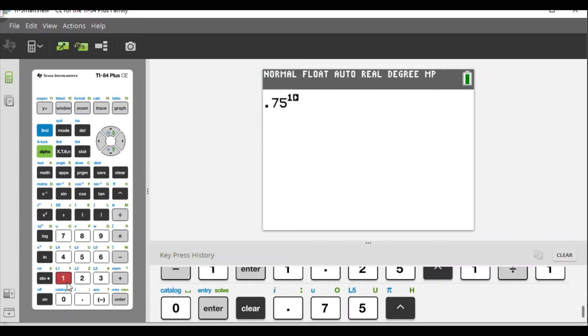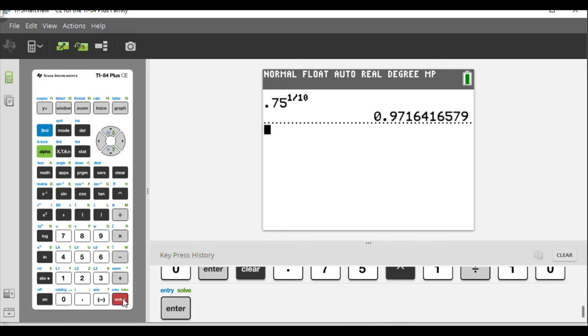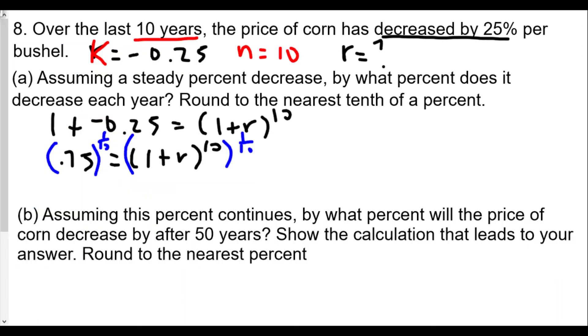Raised to 1 divided by 10, and we get in this case the value of 0.9716416579. So this value is going to be the 1 plus r value.